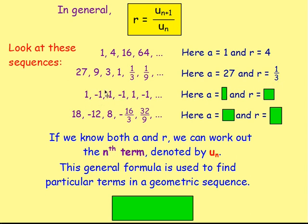For the next one, you've got one, negative one, one, negative one, one, negative one, and so on. The value of a is just one — it's your first term. And the common ratio: if you do negative one divided by one, you get negative one. So that is your common ratio. You can see that you're multiplying by negative one every time.